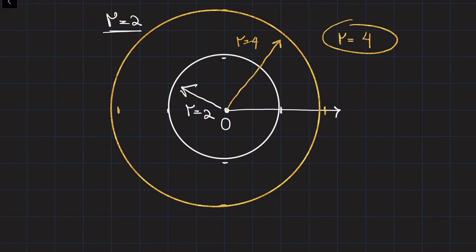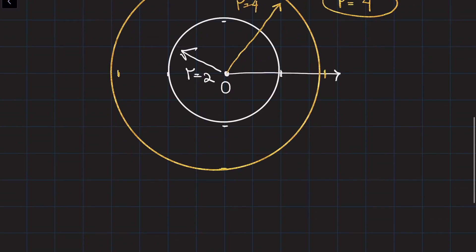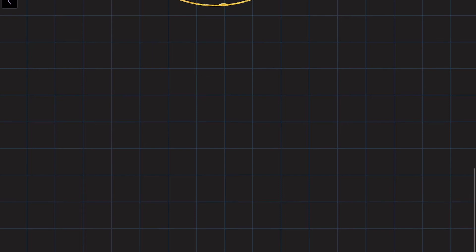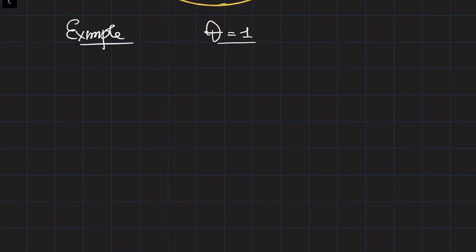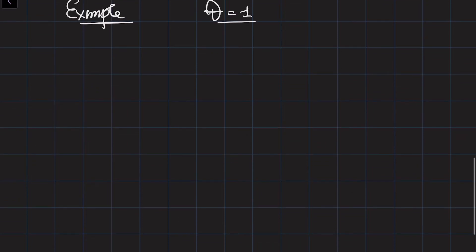We can also place the center at different points — we'll come back to that. Now let's do another example. Let's say our curve is theta equals pi over four. Here r is not defined, meaning points along that curve can be at any distance from the origin. It doesn't matter what the distance is — the angle between the point and the origin must always equal pi over four.